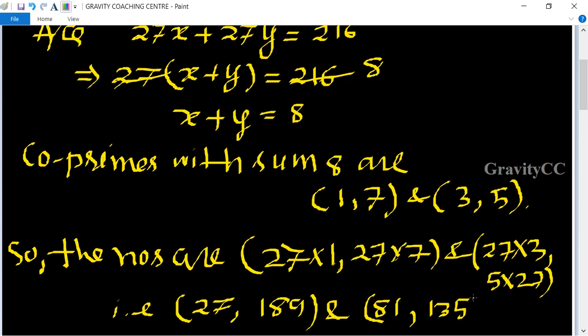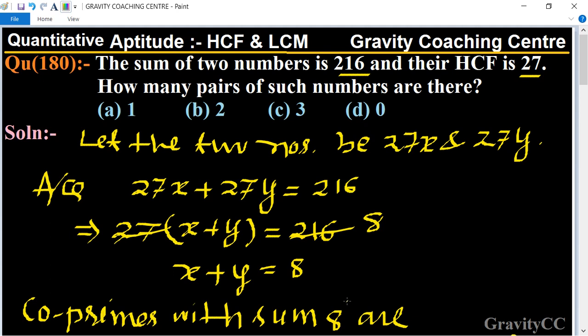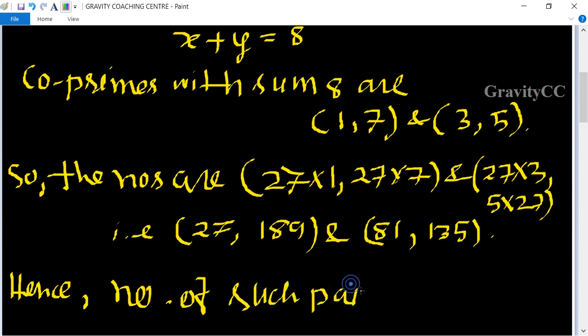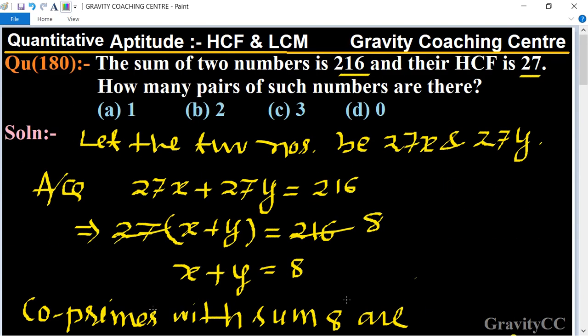So here two pairs are found. Hence, the number of such pairs equals 2. So option B is the correct answer.